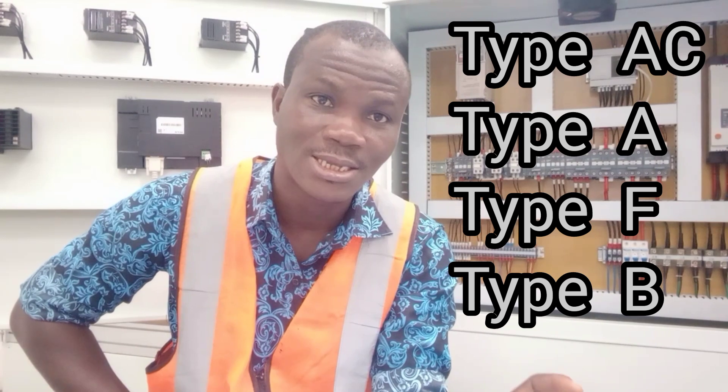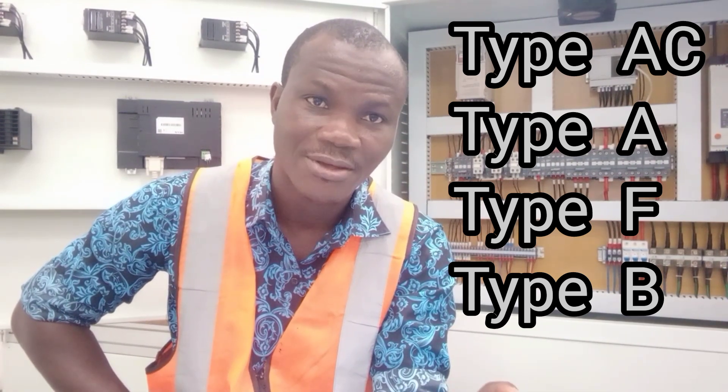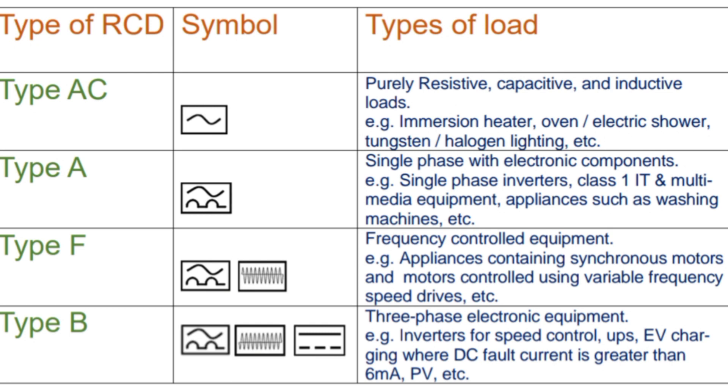The four types of RCDs as defined by the IEC 60755 standard are the type AC, the type A, the type F, and then the type B. There are symbols that identify each of the RCD types. In the table, you'll see the type in the first column, then the symbol in the second column, and then where they can be applied in the last column.